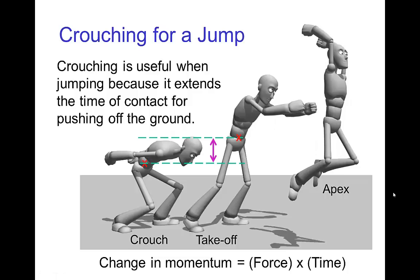When a character wants to jump as high as possible, they exert as much force as possible. But the more force they exert, the faster they go and the quicker they lose contact with the ground. It's only when a character is in contact with the ground that they are accelerating. So crouching is useful in order to jump as high as possible, because that extends the time during which the character is in contact with the ground.